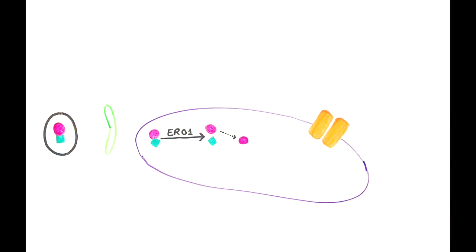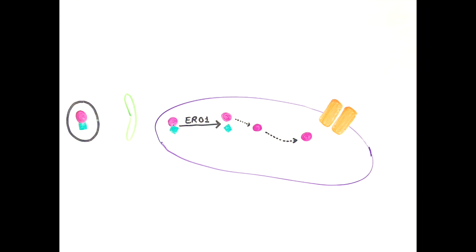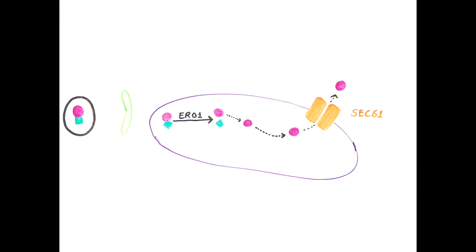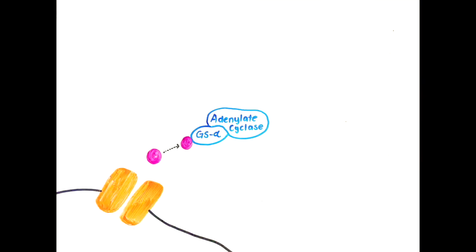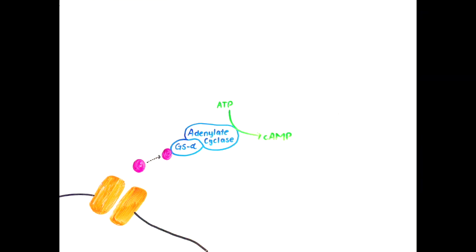The A subunit exits the ER through a channel called SEC61 and binds to the GS alpha subunit of a GS G protein. This causes activation of the G protein, and the GS subunit then activates an enzyme called adenylyl cyclase.